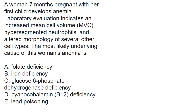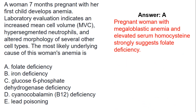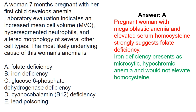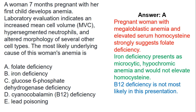A woman seven months pregnant with her first child develops anemia. Laboratory evaluation indicates an increased mean cell volume, hypersegmented neutrophils, and altered morphology of several other cell types. The most likely underlying cause of this woman's anemia is A, which is folate deficiency. Pregnant women with megaloblastic anemia and elevated serum homocysteine strongly suggest folate deficiency. Iron deficiency presents as microcytic hypochromic anemia and would not elevate homocysteine. B12 deficiency is not most likely in this presentation.